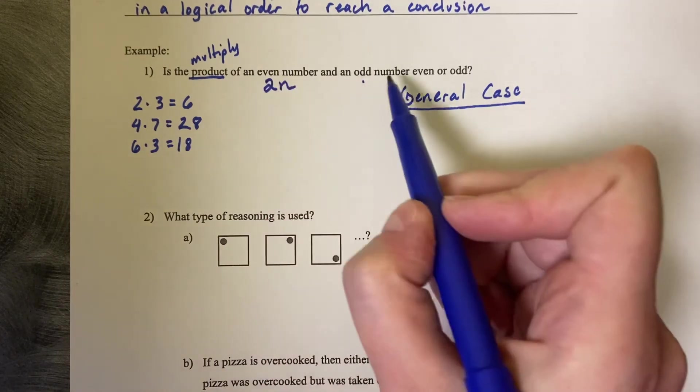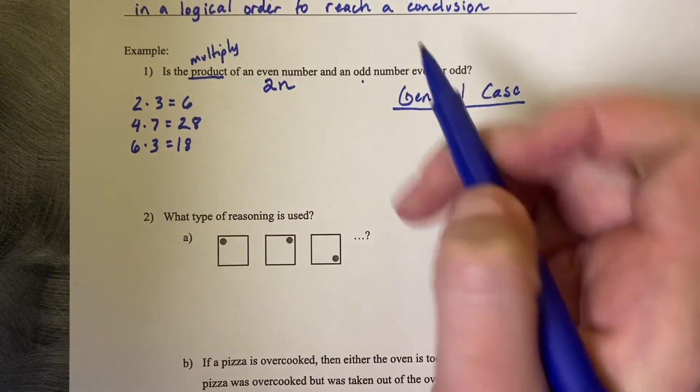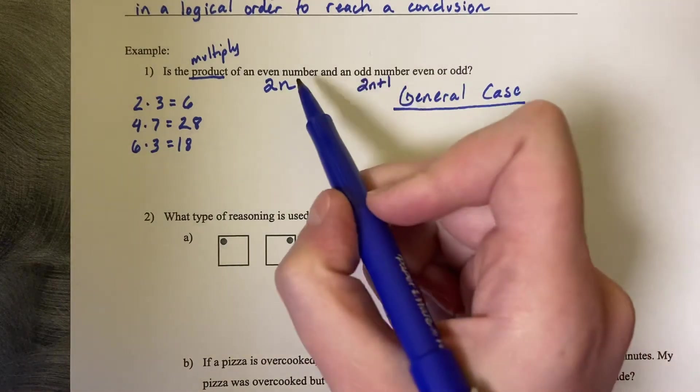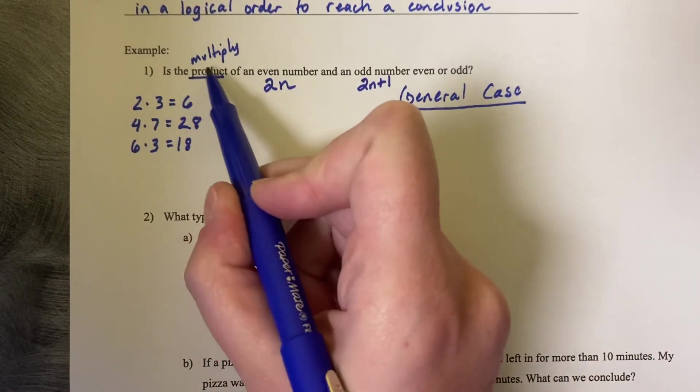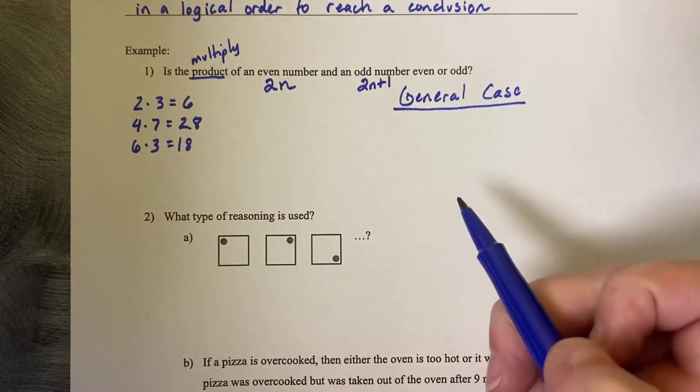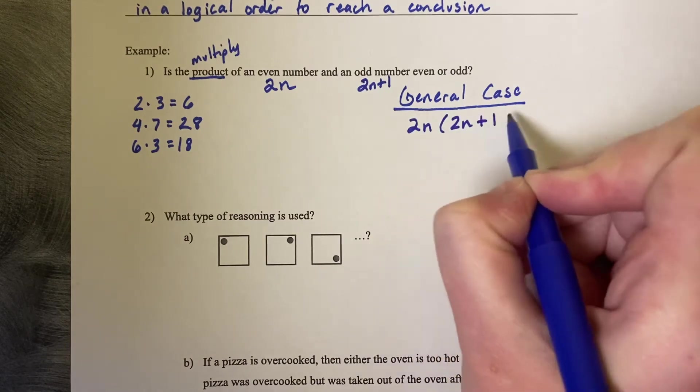Now if I want to make an odd number, well we can make an even number and add 1. So 2n plus 1. And then what I need to do is multiply this product together. Make a product of an even times an odd number. So 2n times 2n plus 1.